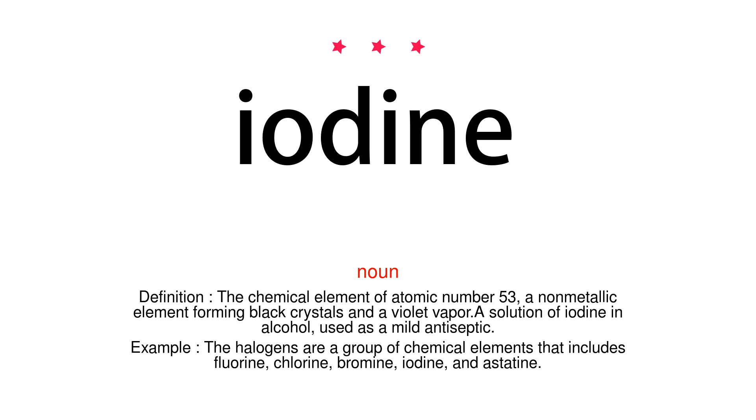Example. The halogens are a group of chemical elements that includes fluorine, chlorine, bromine, iodine, and astatine.